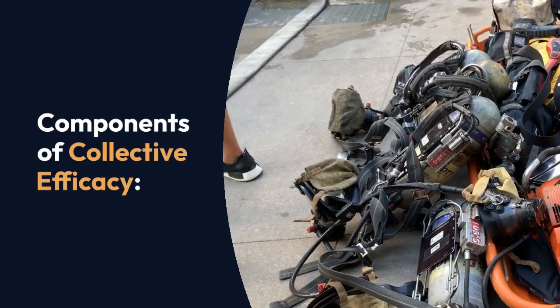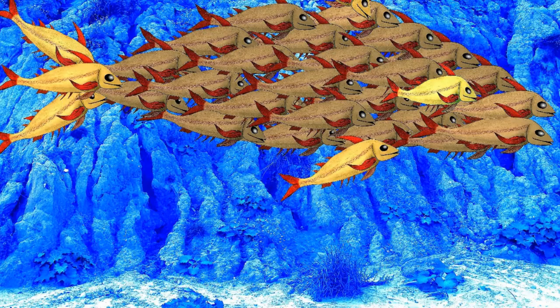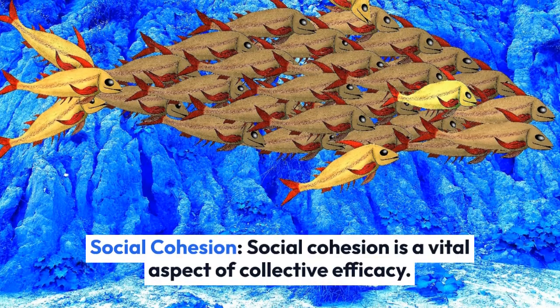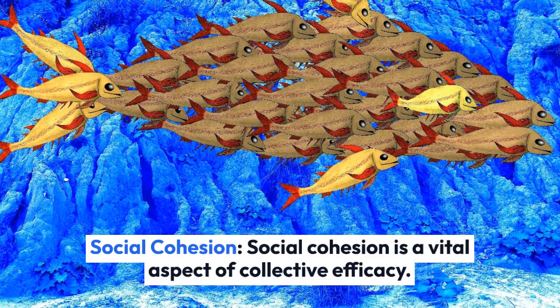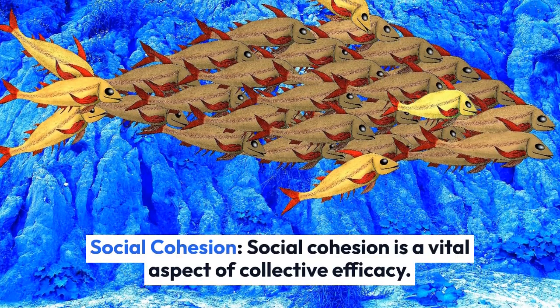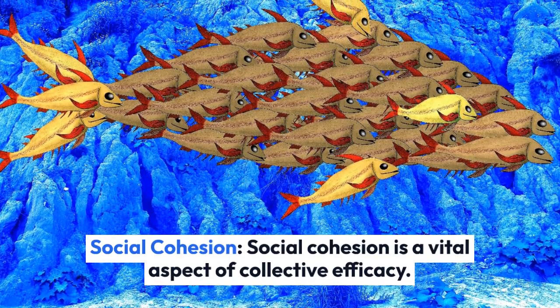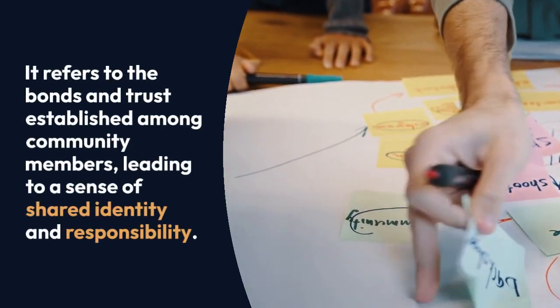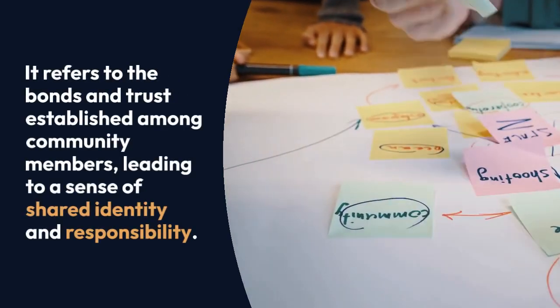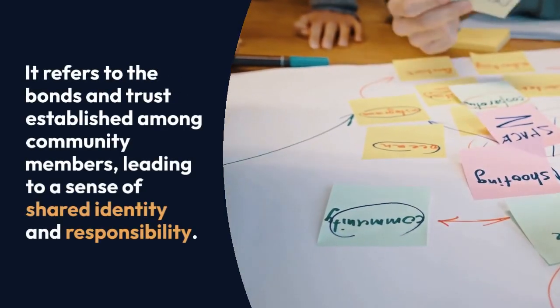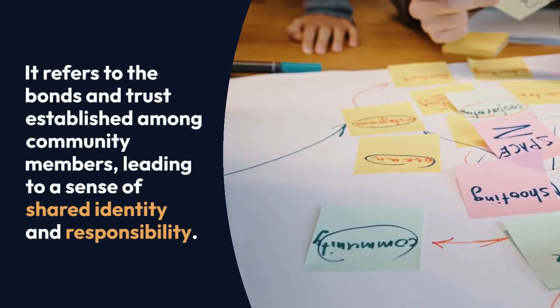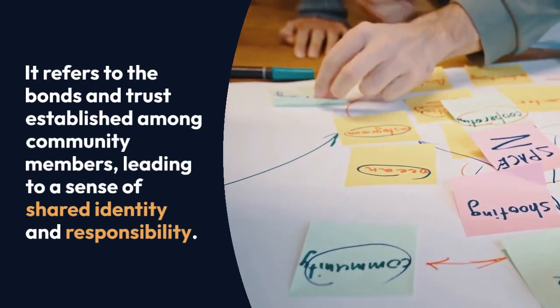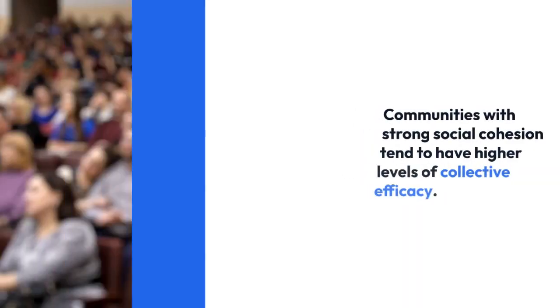Components of Collective Efficacy — Social Cohesion: Social cohesion is a vital aspect of collective efficacy. It refers to the bonds and trust established among community members, leading to a sense of shared identity and responsibility.